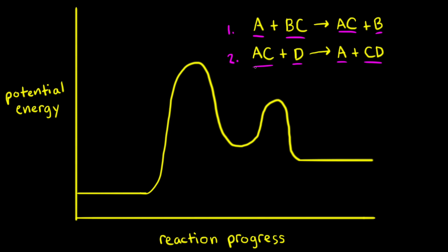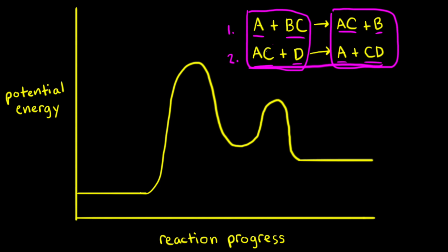If we add the two steps of our mechanism together, we can find the balanced equation for this hypothetical reaction. We put all of our reactants on the left side and all of our products on the right side. AC appears on both sides, so we can cancel it out. A also appears on both sides, so we can cancel that out. The overall equation is BC plus D goes to B plus CD.